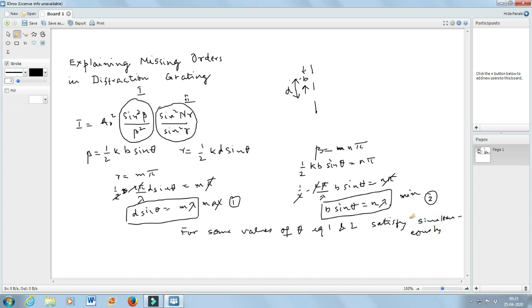So what will happen? There will be a minimum instead of maximum because these two functions are multiplied. Multiplication of any two functions, one function is equal to 0 will always give you 0. So at that position, you will have a minima instead of a maxima.